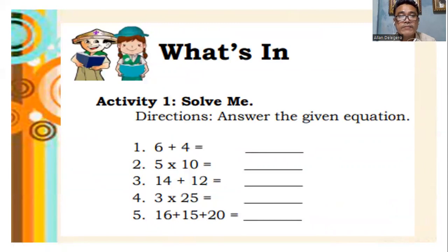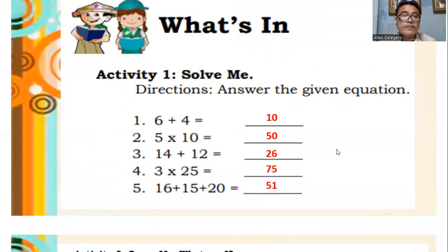Solve as fast as you can — numbers 1 through 5. And for the answers: number 1 is 10, number 2 is 50, number 3 is 26, number 4 is 75, number 5 is 51.